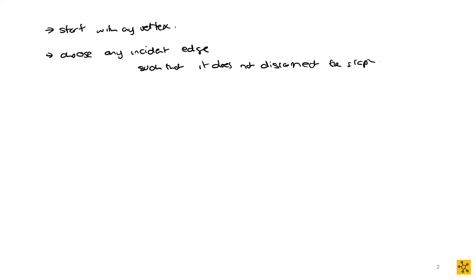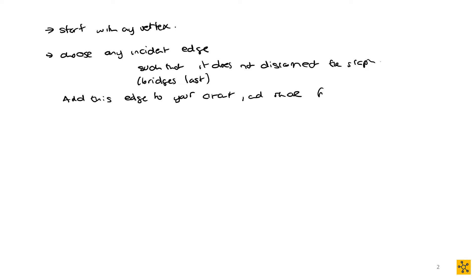Bridges are your last resort — if an edge is a bridge, it is your absolute last resort to choose. You add this edge to your circuit and remove it from the graph, so that you can't reselect or go through that edge again.